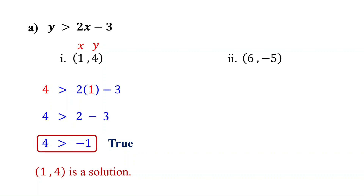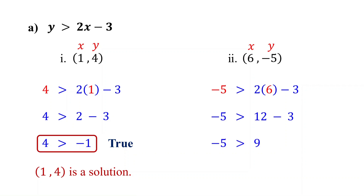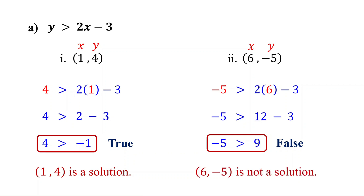What about the ordered pair (6, −5)? Is it a solution? Substitute 6 for x and negative 5 for y, then simplify. 2 times 6 is 12, and 12 minus 3 is 9. This is false because negative 5 is not greater than 9. So the ordered pair (6, −5) is not a solution to the inequality y > 2x − 3.